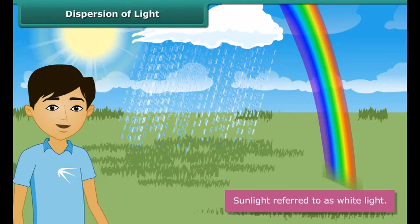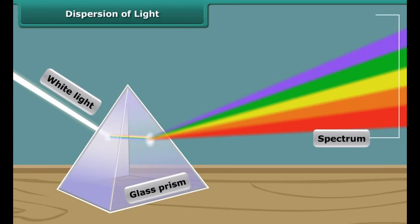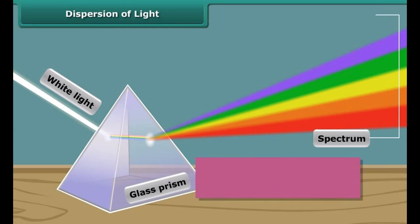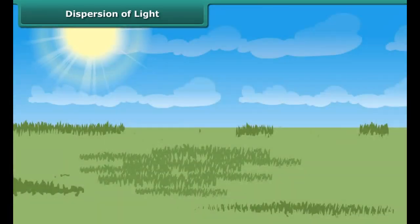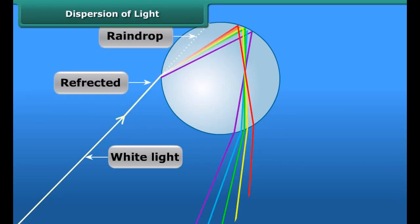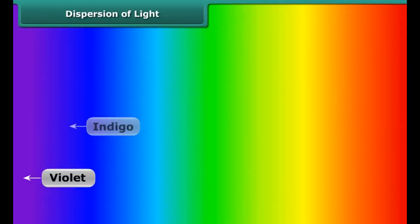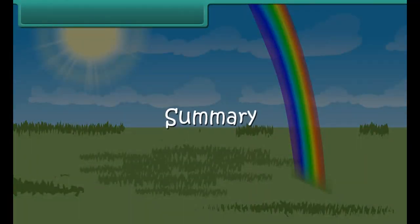What do we observe in the sky after rainfall? Yes, a beautiful multicolored rainbow. But where did all these colors come from? We know that sunlight is referred to as white light. When this light passes through a glass prism, the light splits into seven colors. It means that the beam of white light has split up into its constituent colors. This group of colors represents the spectrum of white light. Therefore, this phenomenon of splitting of white light into its constituent colors is called the dispersion of light. Coming back to the rainbow, we can now say that the dispersion of white light passing through the water droplets formed the rainbow.